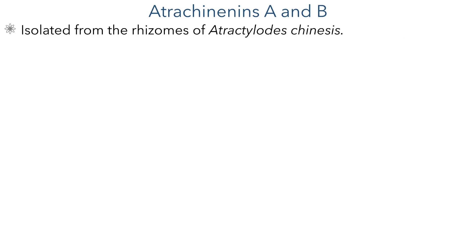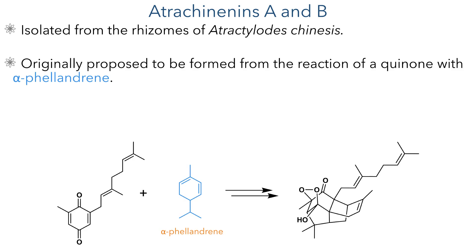Atrojenenon A and B were first isolated in 2022 by Chen et al. from the rhizomes of Atrojenenon chinensis. In their paper, they propose that this compound is formed from the Diels-Alder reaction of a quinone with alpha-phellandrene, followed by a series of oxidations and cyclisations.